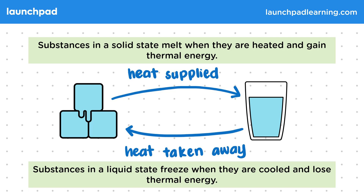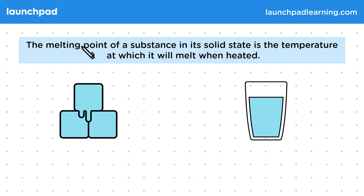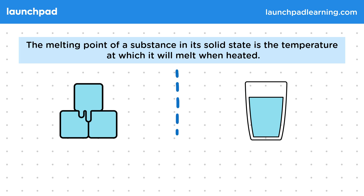So how exactly does this relate to temperature? Well, the melting point of a substance in its solid state is the temperature at which it will melt when heated. So the melting point of water is zero degrees Celsius.